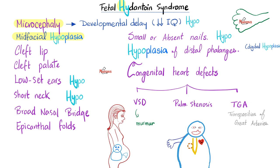If that was not enough, phenytoin can lead to congenital heart defects, such as ventricular septal defect — you'll hear a holosystolic, harsh murmur heard best at the left lower sternal border — pulmonic stenosis, with a crescendo-decrescendo murmur in the left second intercostal space, and transposition of the great vessels.